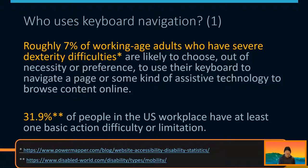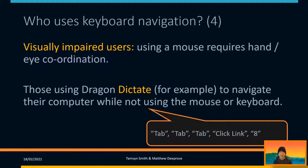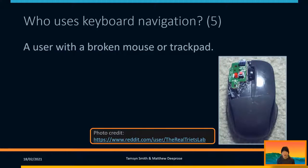In terms of who uses keyboard navigation, there are some significant stats here. A significant proportion of people may have difficulties with dexterity, which could include people with conditions that impair or limit their fine motor skills. As mentioned earlier, if you have a visual impairment, seeing the pointer or having hand-eye coordination might be more difficult. Or if you've used drag-and-click to navigate around a screen just through speech, you probably found yourself saying 'tab, tab, tab' to move around. Or you might just have a broken mouse — that's an example of a situational impairment.